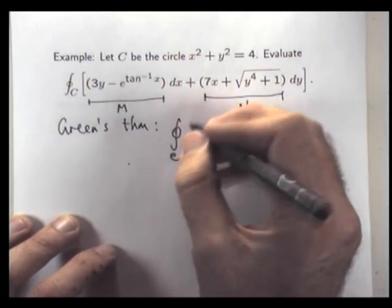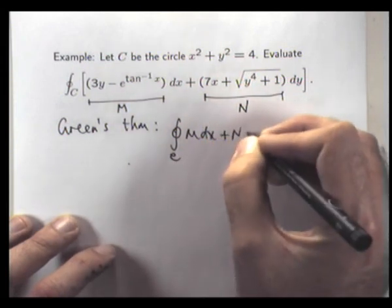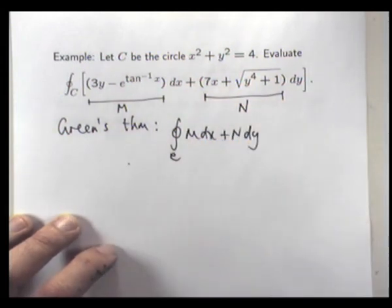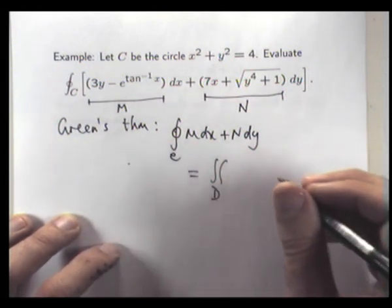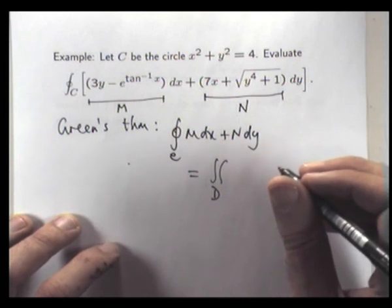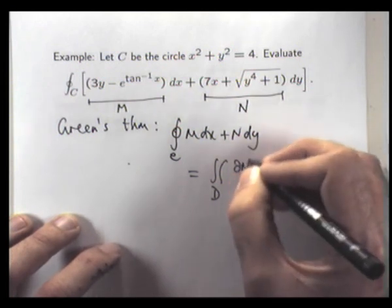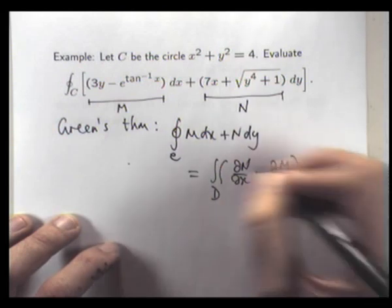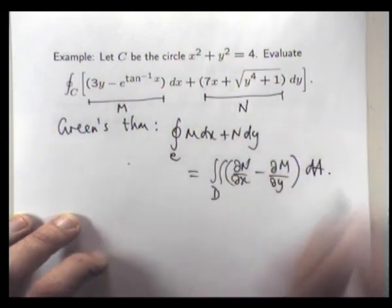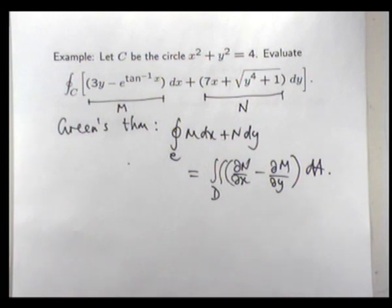The line integral is just equal to the double integral of the scalar curl, right? The scalar curl. All right, so let's calculate the partial derivatives that we're going to use, and then look at a double integral.